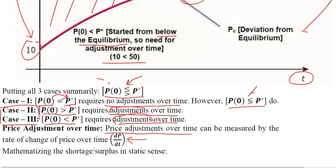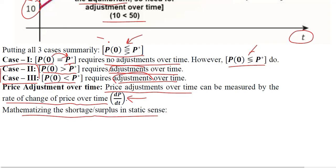The change in price over time as time changes — the rate of change of price over time — is represented with the derivative of price with respect to time, dp/dt. This can be modeled in an equation to measure how these adjustments take place, mathematizing the shortage or surplus concept from static analysis.